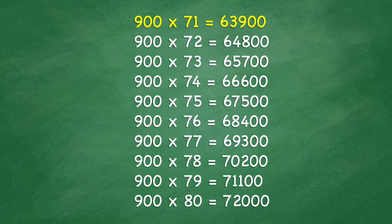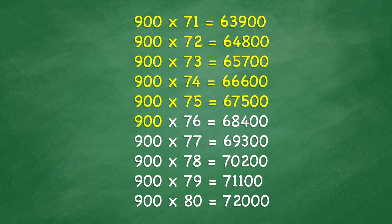900 times 72 equals 64,800. 900 times 73 equals 65,700. 900 times 74 equals 66,600. 900 times 75 equals 67,500. 900 times 76 equals 68,400. 900 times 77 equals 69,300. 900 times 78 equals 70,200. 900 times 79 equals 71,100.